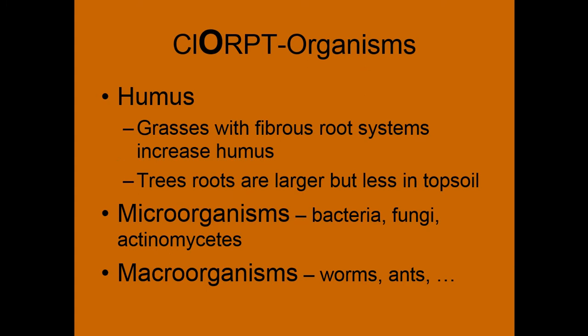Organisms: so our humus, the grasses with their fibrous root systems increasing humus content, tree roots are larger. But even our fine tree root turnover, the microorganisms — bacteria, fungi, etc. — and macroorganisms all work to add to that soil and affect the soil turnover.